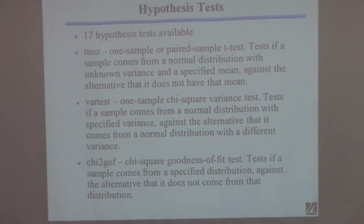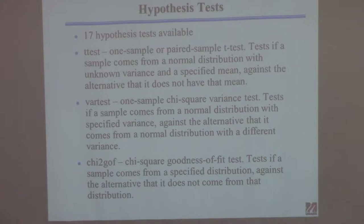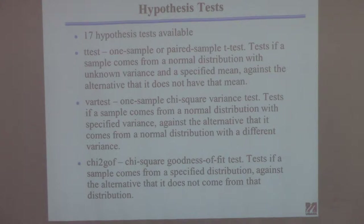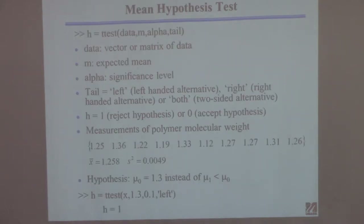If you use a test for normal distribution on a small dataset that isn't normally distributed, you'll probably get bad answers — you'll still get answers, but they won't be good. The chi-squared goodness of fit function tests whether samples come from a normal distribution. So the first thing you could do is apply this chi-squared goodness of fit and see if your samples seem to come from a normal distribution. I don't have time to go over it, but you can do help chi2gof to find it.